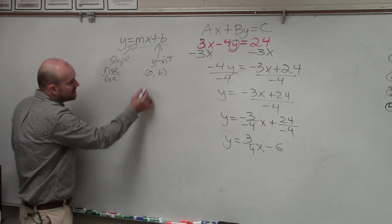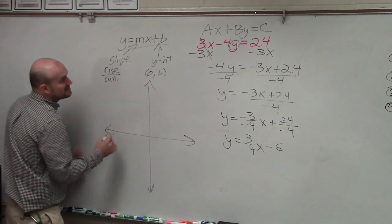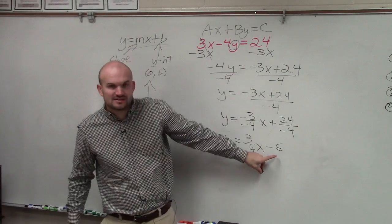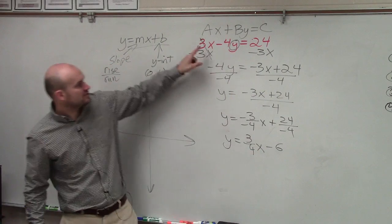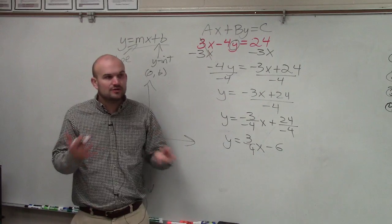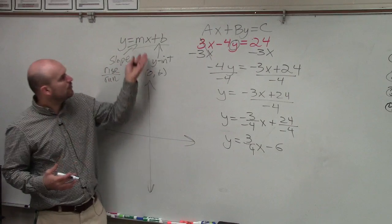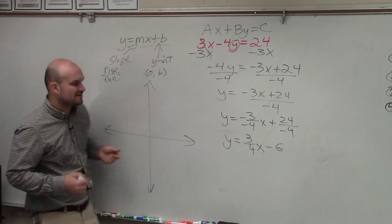So as you guys go ahead and graph this, you notice that the y-intercept is not 24. The y-intercept is negative 6. The slope is not 3. It's 3 fourths. So you can only determine, well, I'll show you another way, but we can only determine our slope and our y-intercept when we rewrite it in slope-intercept form.